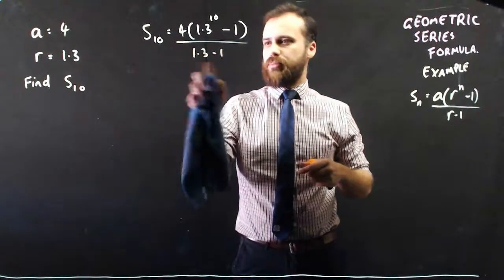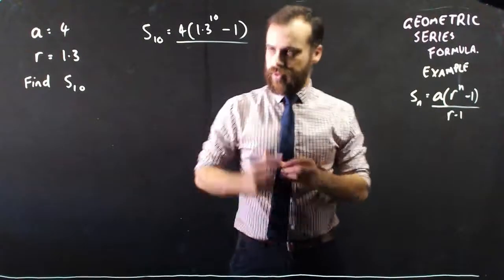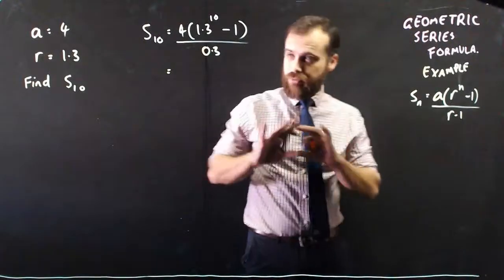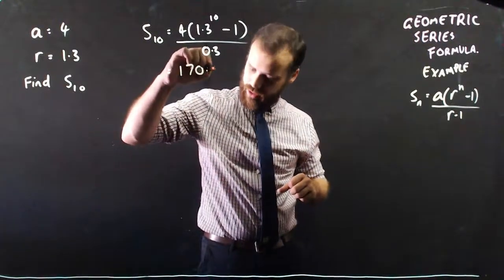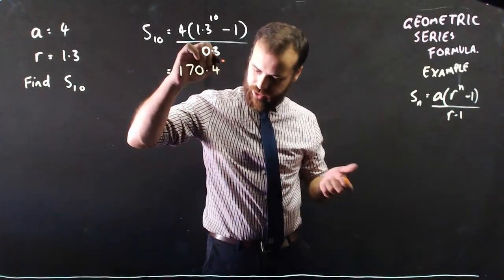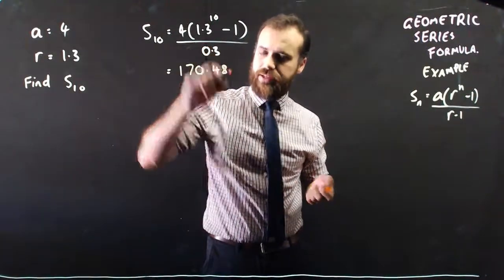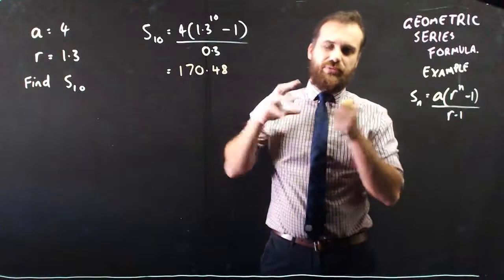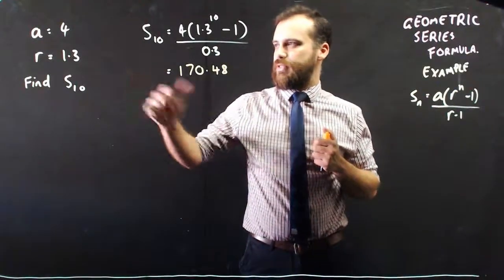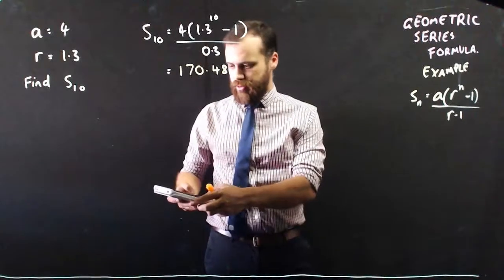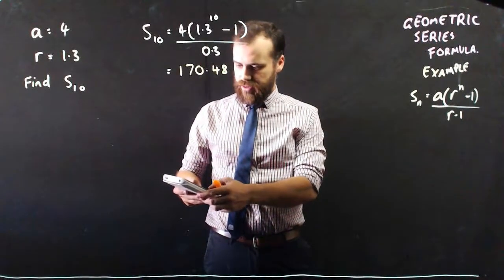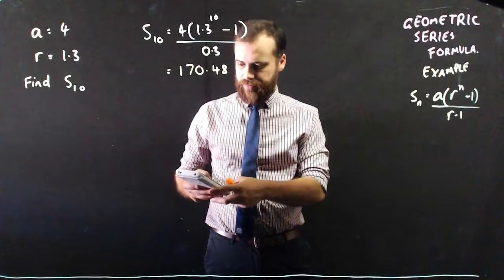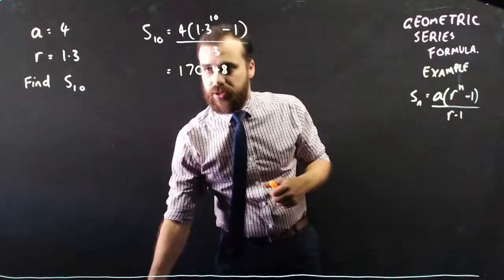Now, this happens quite a bit. So 1.3 minus 1 is just 0.3. Calculate it. Answer. End up with a really ugly decimal here. It's at 170.4... Well, let's just round to two decimal places. 4, 8. Very ugly decimal because we're multiplying by 1.3. 1.3 to the power of 10 is going to be a really disgusting number. And each of our terms gets uglier as we go. It's going to be 4 and then the next term is going to be 5.2 and then the next term is going to be 6.76. So that's why we end up with such a gross decimal.